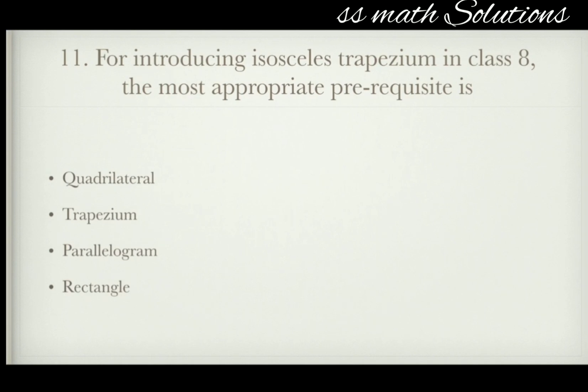For introducing isosceles trapezium in class 8, the most appropriate prerequisite is — quadrilateral, trapezium, parallelogram, or rectangle? The most appropriate prerequisite is rectangle. So rectangle is the prerequisite for studying isosceles trapezium.